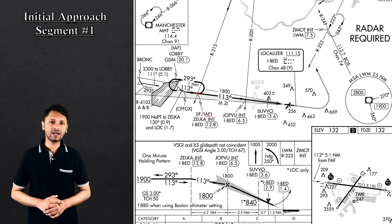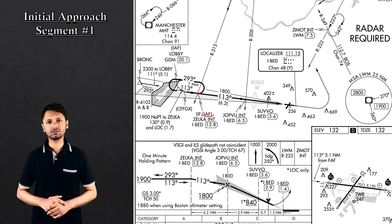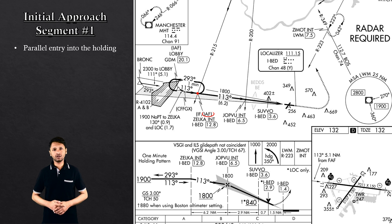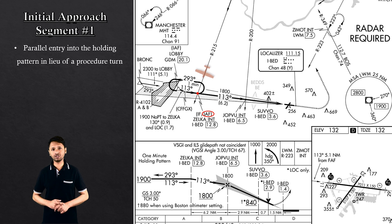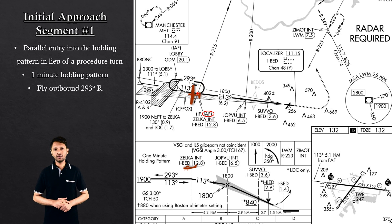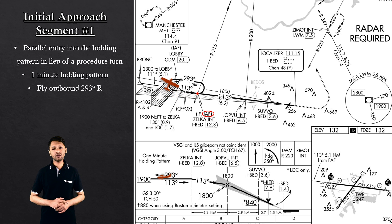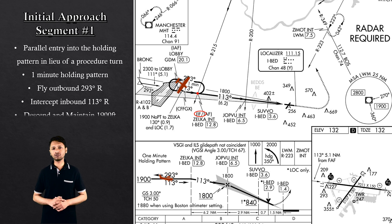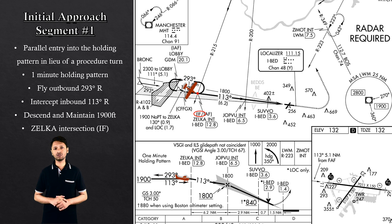The approach here at Bedford has more than one initial approach segment. One of these involves arriving at the ZELTA intersection and doing a parallel entry to a holding pattern in lieu of a procedure turn on one-minute legs, as indicated. The pilot will fly outbound on a 293 radial, make a standard rate turn to the right, then fly inbound to intercept the 113 radial while descending to 1,900 feet at ZELTA intersection, which is now the intermediate approach fix.